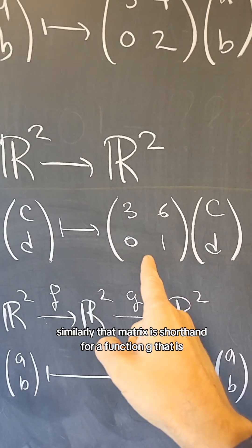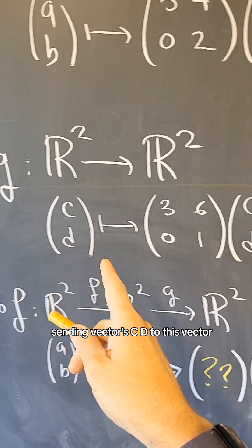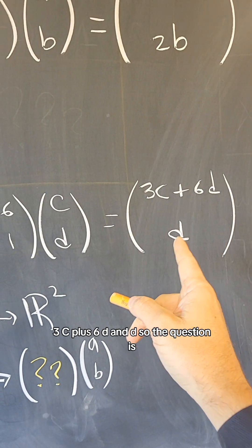Similarly, that matrix is shorthand for a function G that is sending vector CD to this vector 3C plus 6D and D.